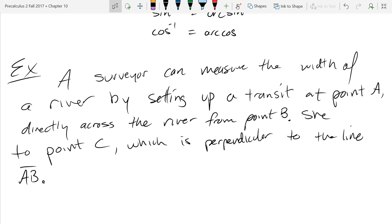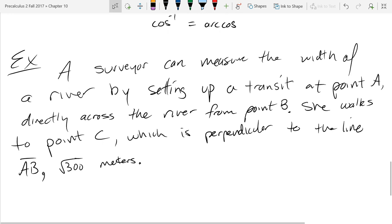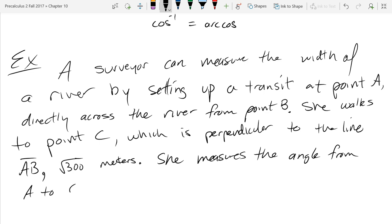She walks square root 300 meters and measures the angle from A to C as 30 degrees. How wide is the river?